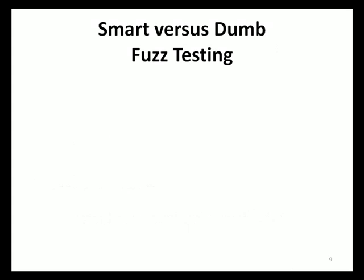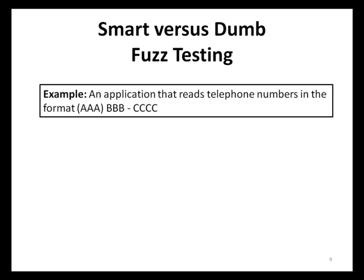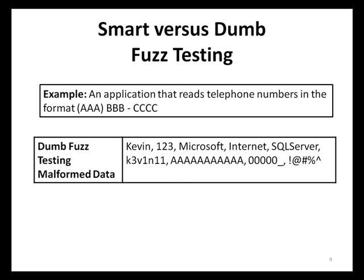The difference between dumb and smart fuzz testing is that dumb fuzz testing involves randomly malformed data sent to an application with no regard to expected data formats. In contrast, smart fuzz testing involves preserving expected data formats where only certain values are changed to create malformed data. Suppose we have an application that reads telephone numbers in a specific format. With dumb fuzz testing, random data is used regardless of expected format, and most applications will reject data not formatted as expected. Dumb fuzz testing tools may randomly create data in the expected format, but the chances of this are rare.